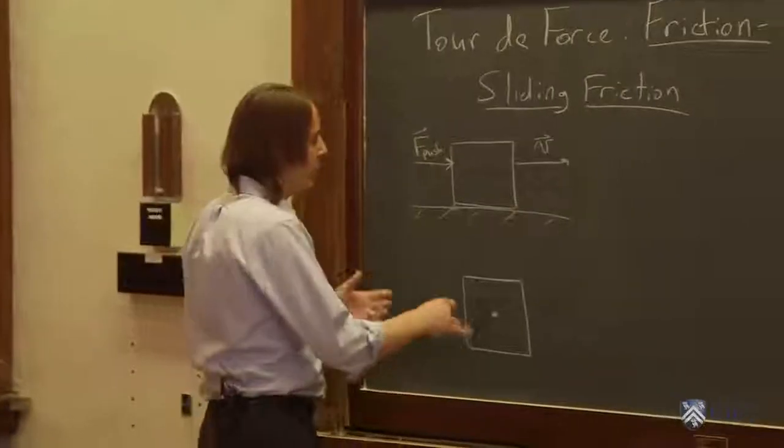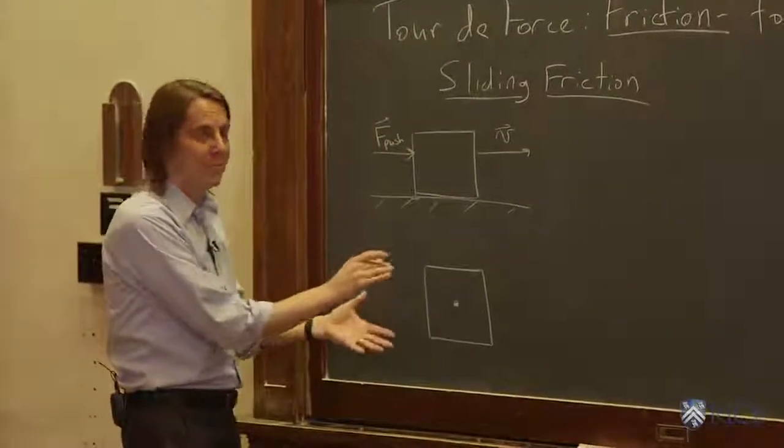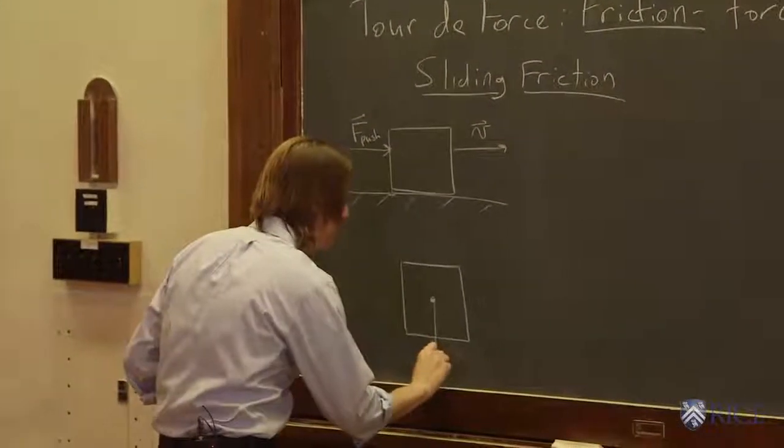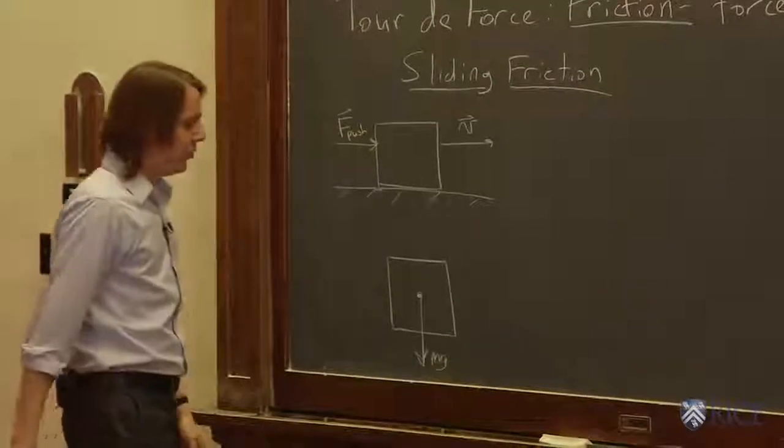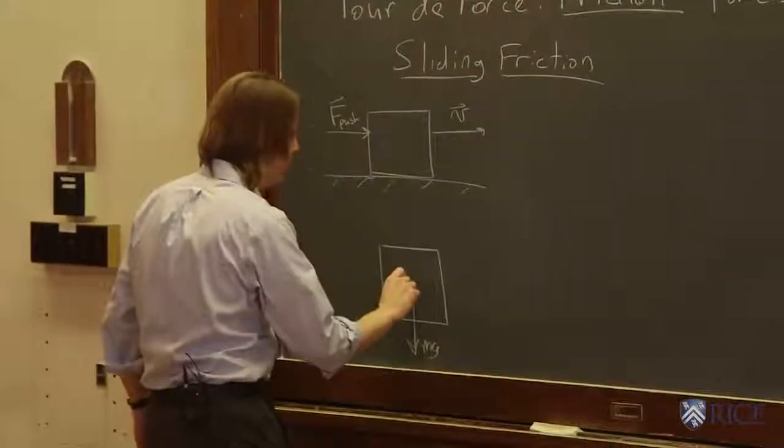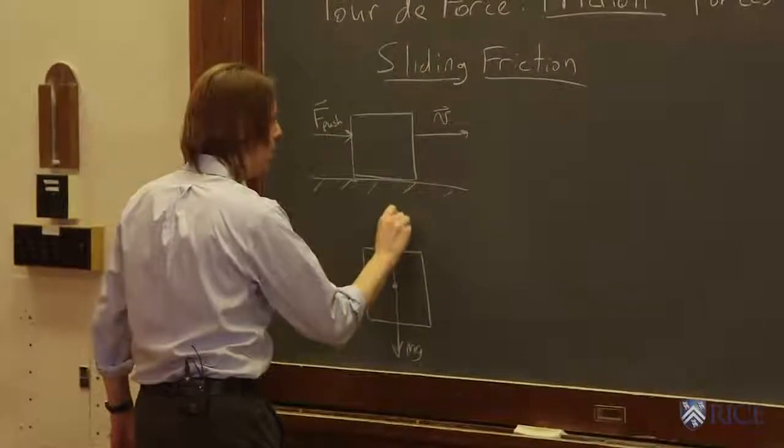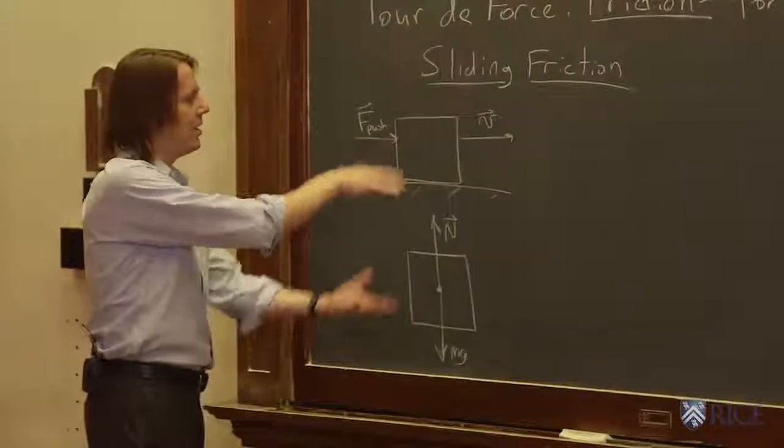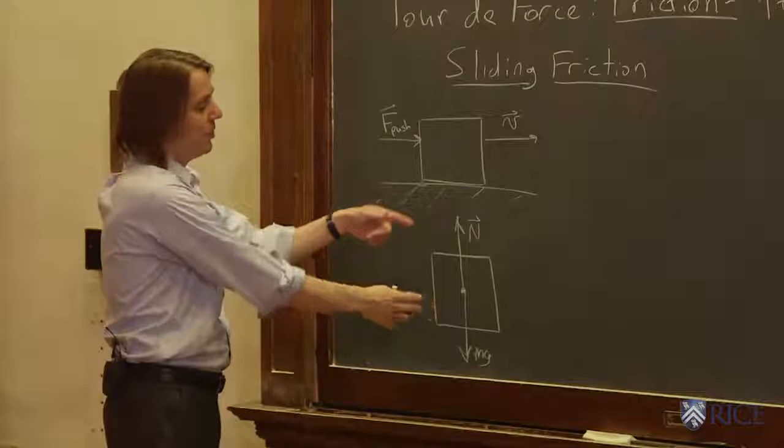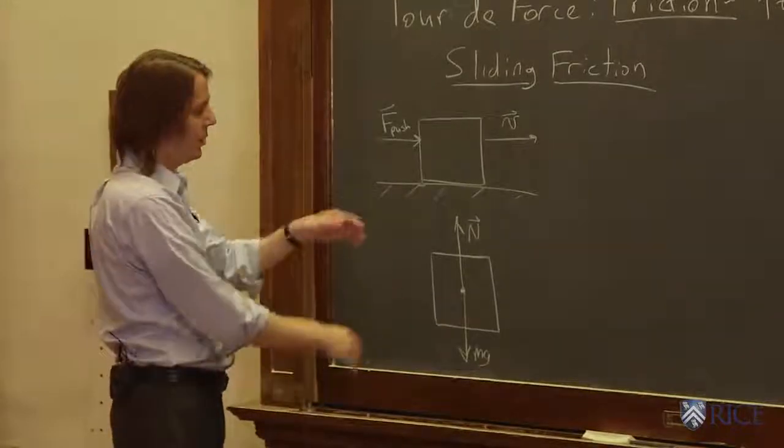So one force we know, because when you do a free body diagram, you've got to get all of them. One force, mg, force of gravity pulling it down. We know the table applies a normal force. And since it's not accelerating in the y direction, we know that those two must be equal and opposite. Those two are canceling each other out.